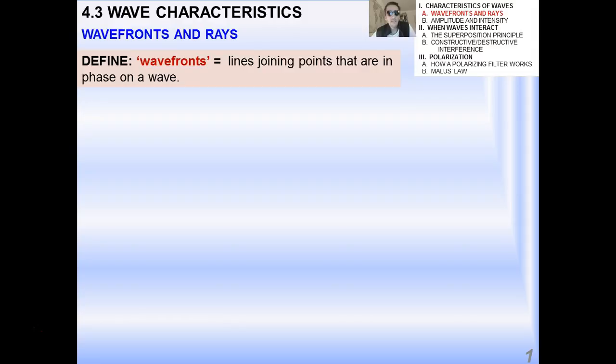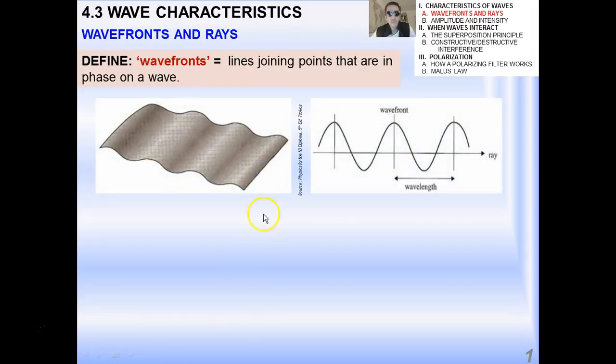All right, so I just wanted to define this physics term called wavefront. And yes, it is one word. You probably won't find it in the dictionary as such. But a wavefront is basically a line joining points that are in phase on a wave. So here are two depictions of waves that you should be familiar with. This one on the right may be more so than the other one.